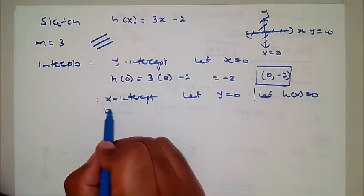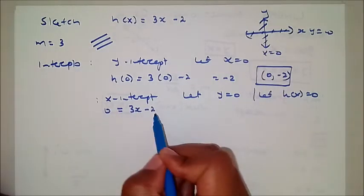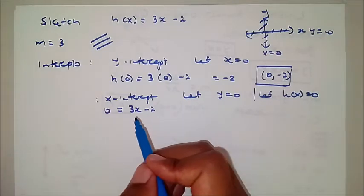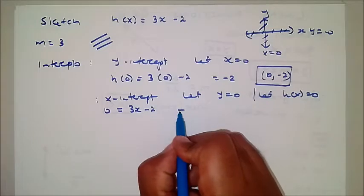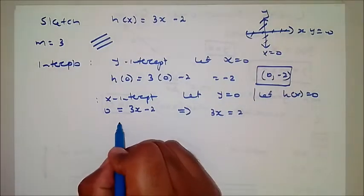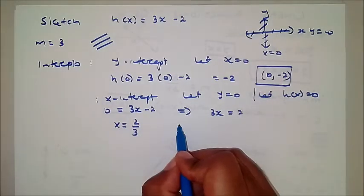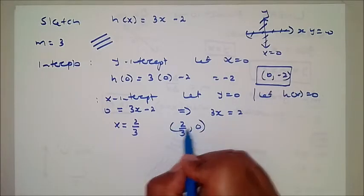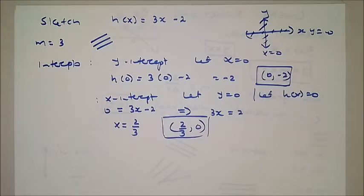So we set 0 = 3x - 2, which gives 3x = 2, so x = 2/3. Therefore the x-intercept is at (2/3, 0). That is where the graph actually cuts the x-axis.